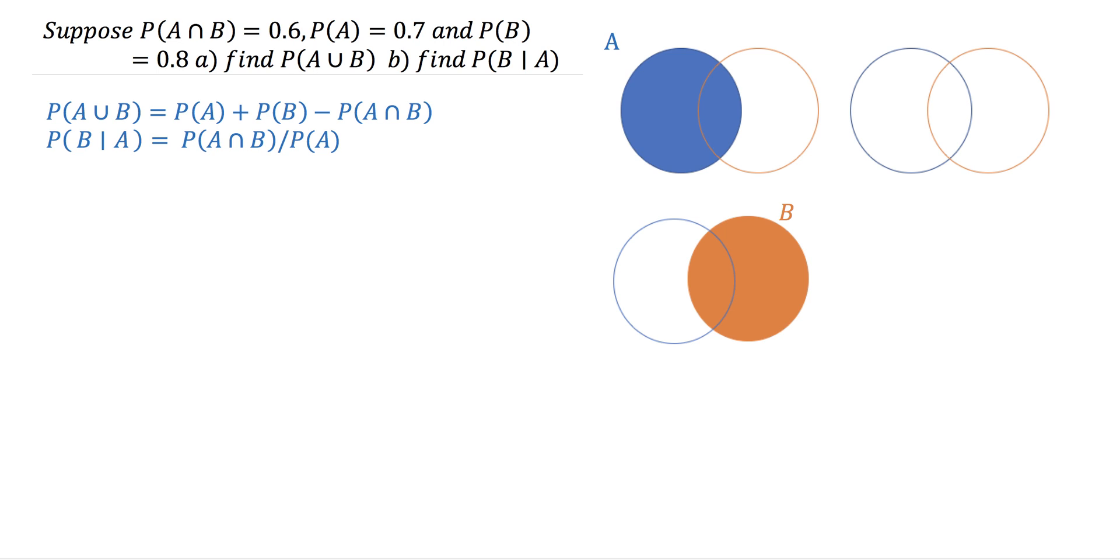So for the probability of A union B, what we want is everything inside of A and everything inside of B. So if I just quickly highlight this roughly, it's a rough sketch.